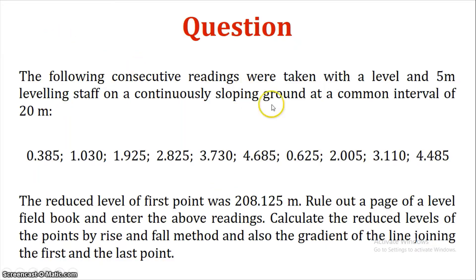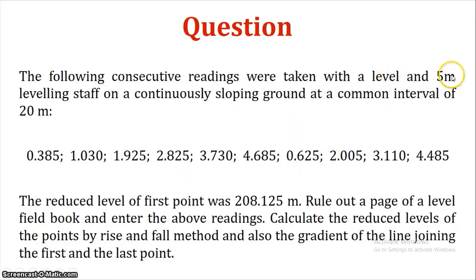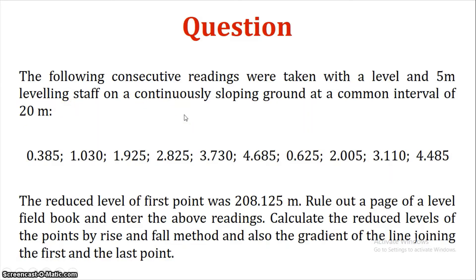The following consecutive readings were taken with a level and 5-meter leveling staff on a continuously sloping ground at a common interval of 20 meters. The reduced level of the first point was 208.125 meters.